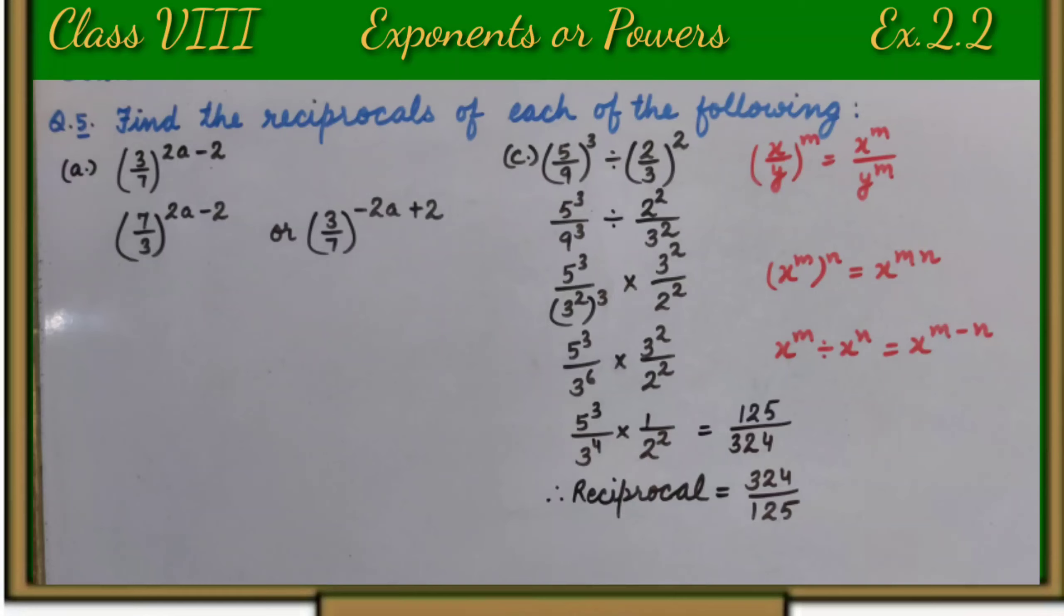And when we solve it, we get 125 upon 324. And its reciprocal will be 324 upon 125.